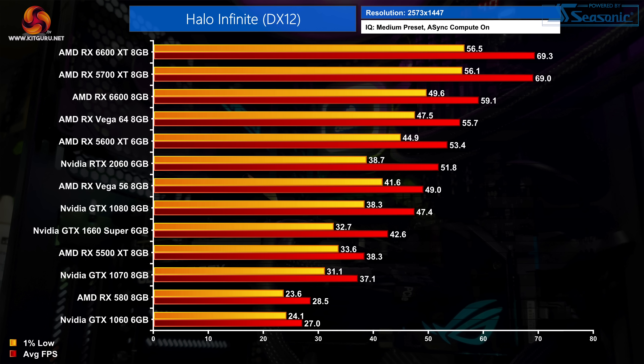As for our 1440p medium preset testing, you'll need a GTX 1070 as the minimum here but even that's still only just holding above 30 FPS. Other AMD GPUs like the Vega 56 are much smoother overall with better 1% lows, as clearly shown when comparing the 5600 XT to the RTX 2060. That said, even the 6600 XT wasn't able to maintain a locked 60 FPS at 1440p medium settings, which honestly says far more about this game than it does about that particular GPU.